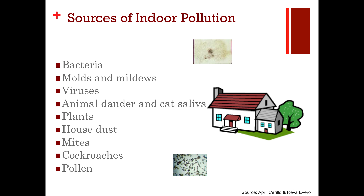In addition to outdoor air pollution, there are also sources of indoor air pollution. These include things like bacteria, mold and mildew, viruses, animal dander, cat saliva, dust, mites, cockroaches, and pollen that gets into the home, all of which can have an impact on your health.